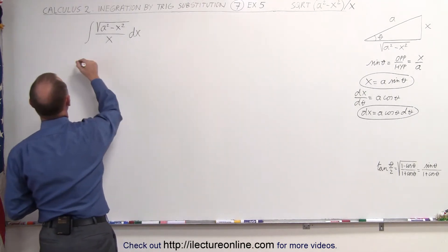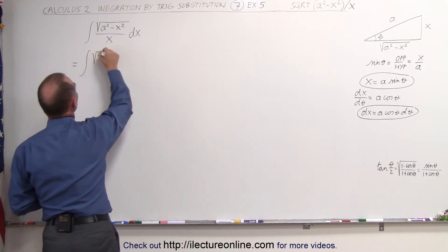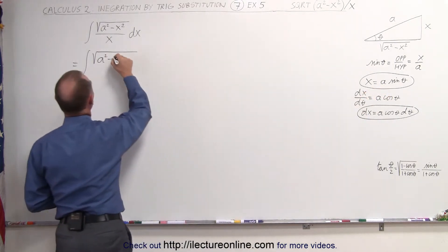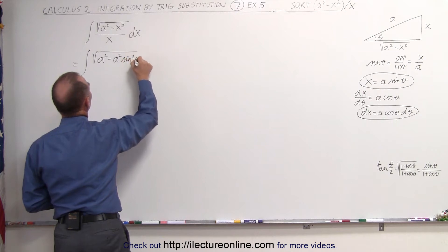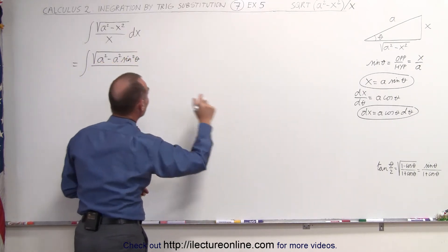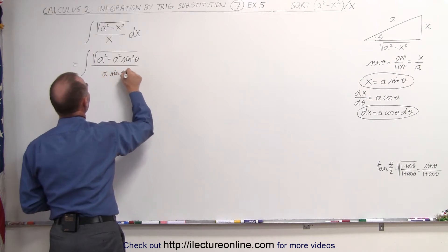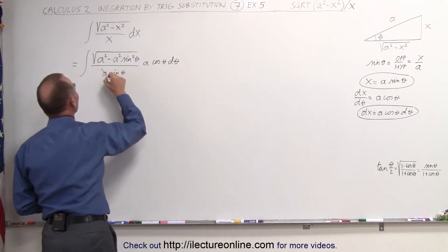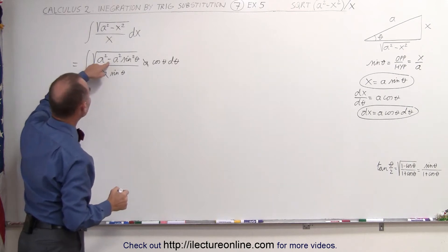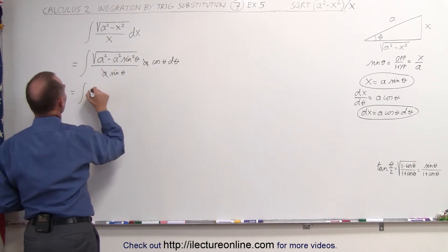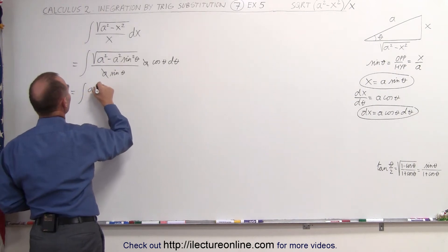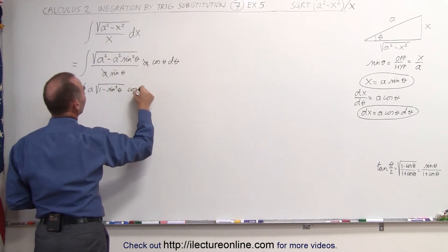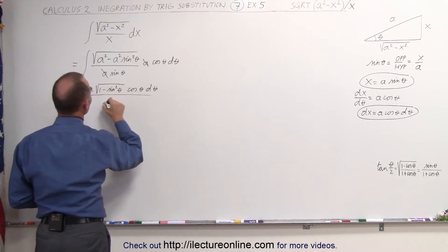First, we make the substitution. This is equal to the integral of the square root of a squared minus a squared times sine squared of theta, divided by x. Again, x can be written as a times the sine of theta, and dx as a times the cosine of theta dθ. Right away, one of those a's cancels out with the other a.